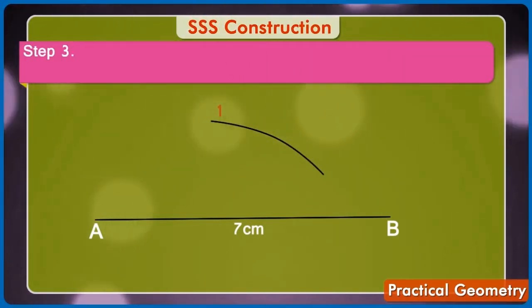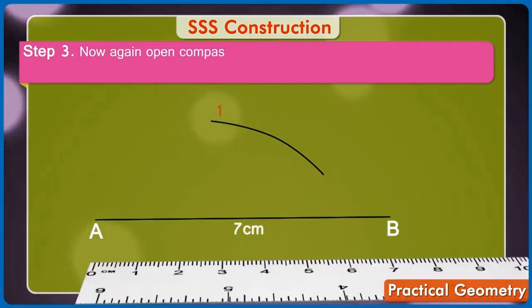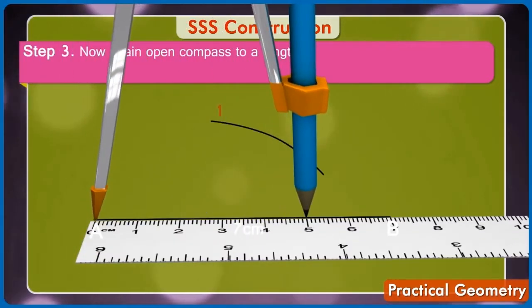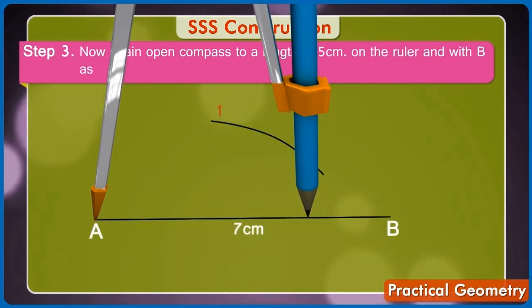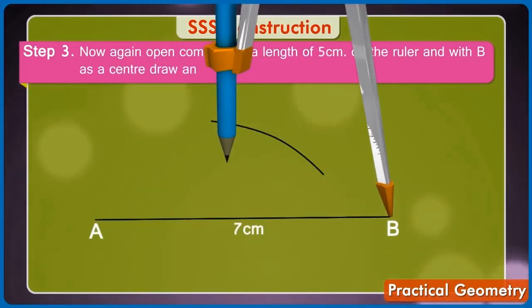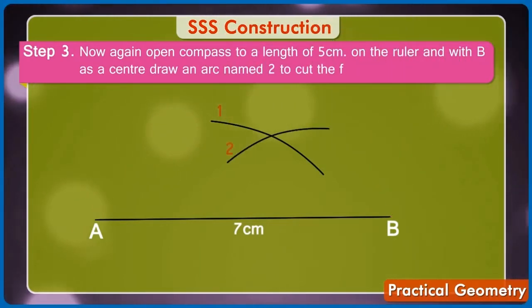Step 3: Now, again, open compass to a length of 5 cm on the ruler and with B as center draw an arc named 2 to cut the first one.